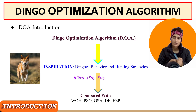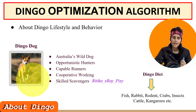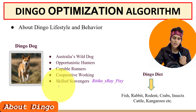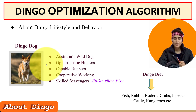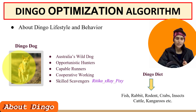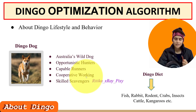First we will discuss dingo lifestyle, social behavior, and hunting strategies. The dingo is considered the oldest breed in the world — a small to medium-sized canine with ginger color and white feet. Dingoes are opportunistic hunters, capable runners, cooperative hunters, and skilled scavengers.